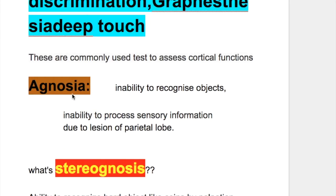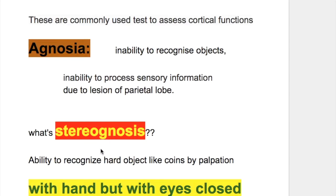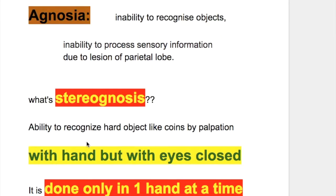What is agnosia? Agnosia is inability to recognize objects. It's an inability to process sensory information due to a lesion of the parietal lobe.